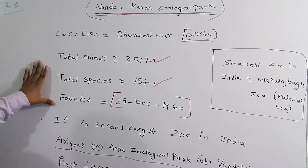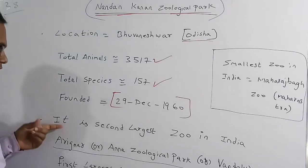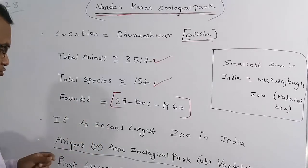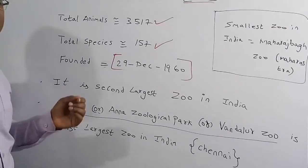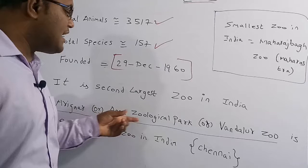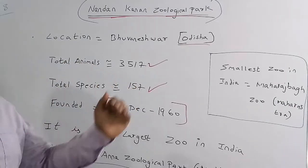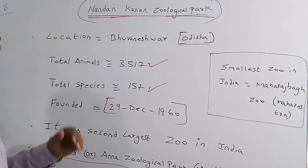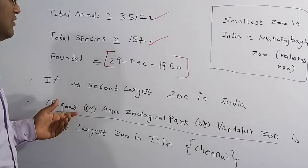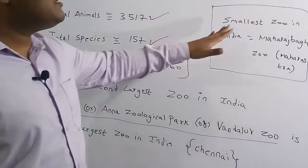Nandan Kanan is the second largest zoo in India. The first largest zoo in India is located in Chennai and is called Arignar Anna Zoological Park, also known as Vandalur Zoo. If they ask for the second largest, the answer is Nandan Kanan Zoological Park.